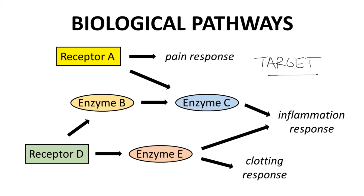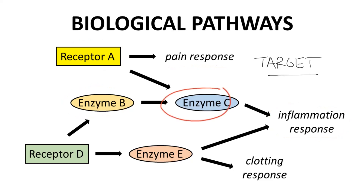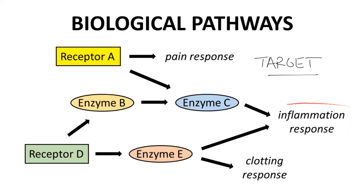Notice in this pathway that some receptors and enzymes are interconnected. Receptor A directly affects pain and indirectly affects inflammation. Enzymes B and C only affect inflammation. If possible, the drug target — often an enzyme or receptor — should ideally only affect responses associated with the disease in question.